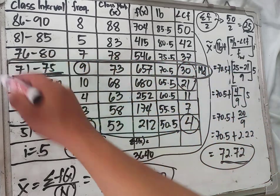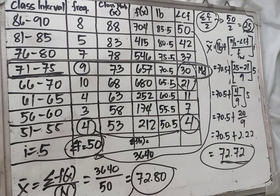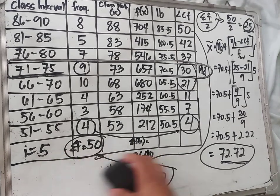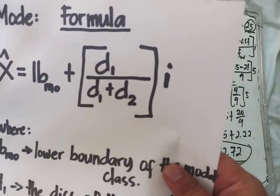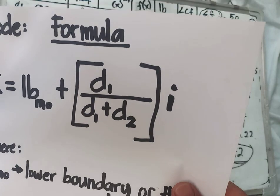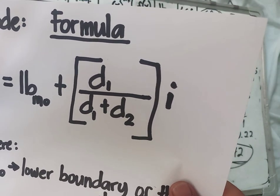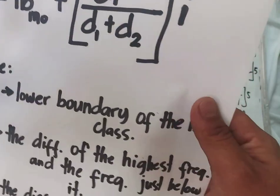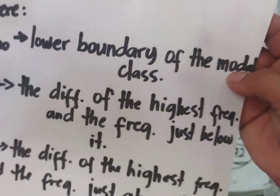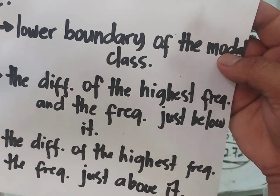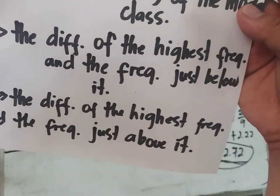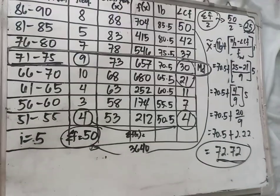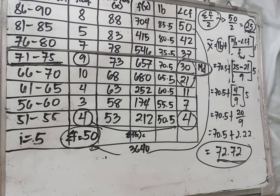Next is the last measure: the mode. The formula for finding the mode is: Mode equals the lower boundary of the modal class, plus D-sub-1 over D-sub-1 plus D-sub-2, times i. Where D-sub-1 is the difference between the highest frequency and the frequency just below it, and D-sub-2 is the difference between the highest frequency and the frequency just above it.